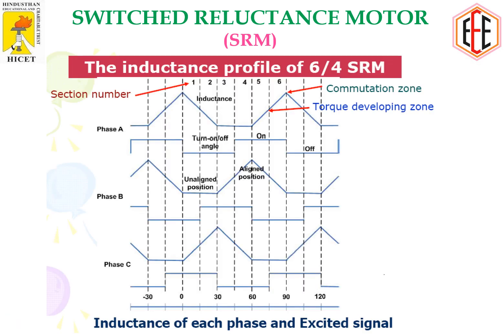The inductance goes to a maximum and then comes to a minimum. When the stator teeth and rotor teeth are in the aligned position, the inductance is maximum. For each phase — phase A, phase B, and phase C — we can notice that by sequentially energizing the coils, the inductance attains its peak value and then comes to a lower value.